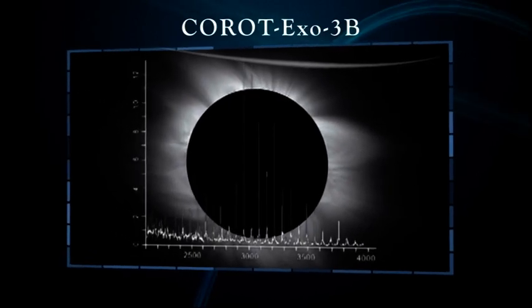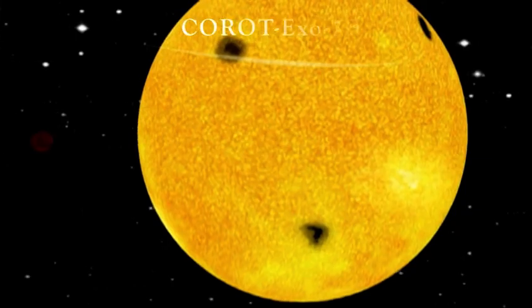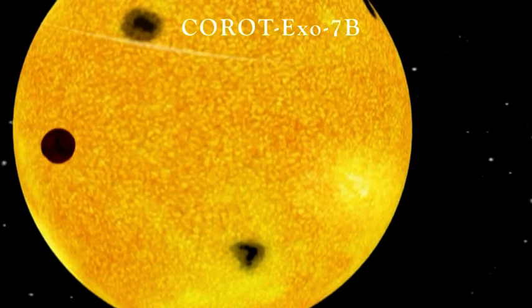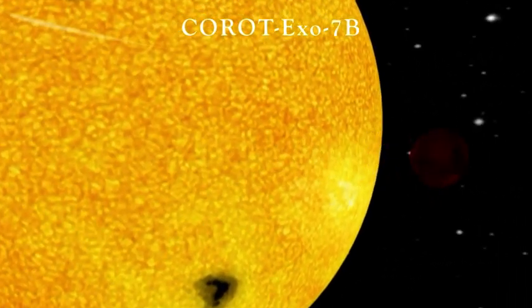CORO XO-3b, which is twice as heavy as lead, and CORO XO-7b, which is the smallest exoplanet discovered to date, at just one and a half times the size of Earth.